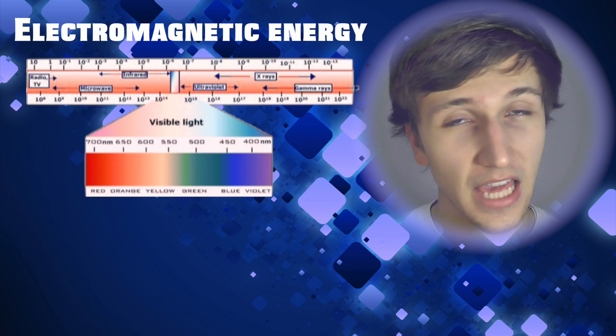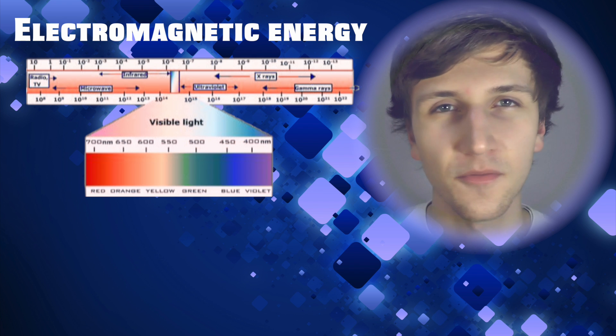If we take a look at the spectrum going from radio waves to gamma rays, we can see that visible light takes up a very small part of it.